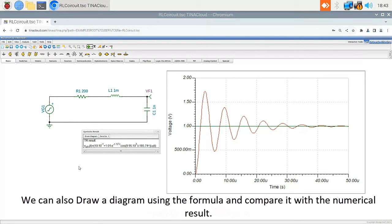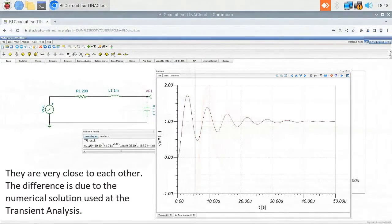The symbolic result appears. The symbolic result describes the transient response of the circuit with an accurate analytic closed formula. We can also draw a diagram using the formula and compare it with the numerical result. They are very close to each other. The difference is due to the numerical solution used at the transient analysis.